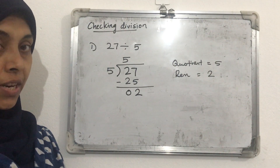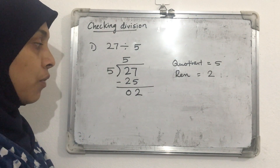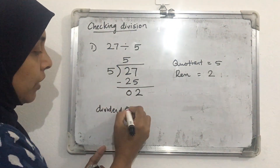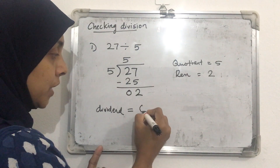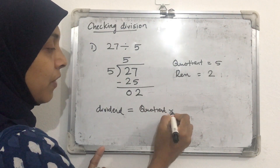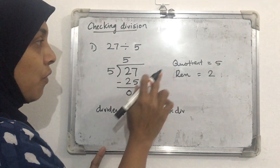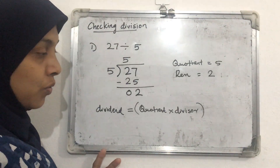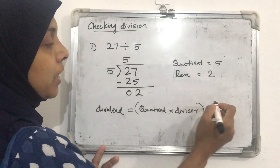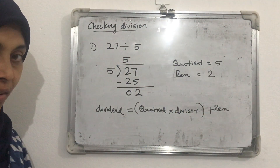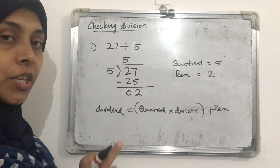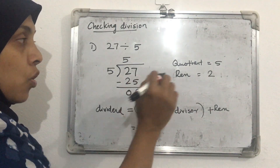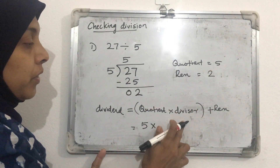Now we want to check whether our division is correct. The rule is: the dividend equals the quotient multiplied by the divisor, plus the remainder. Here the dividend is 27. The quotient is 5 and the divisor is also 5. We first find the product of the quotient and divisor, then add the remainder — we should get back the dividend 27.